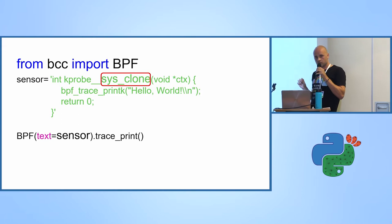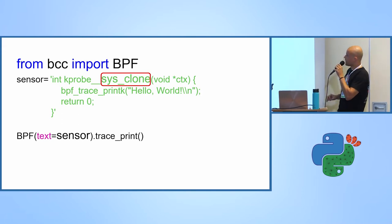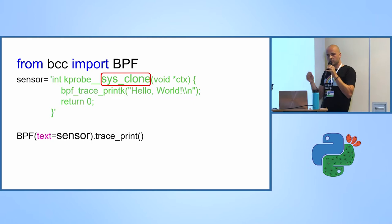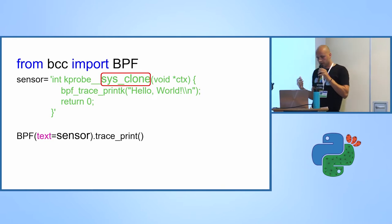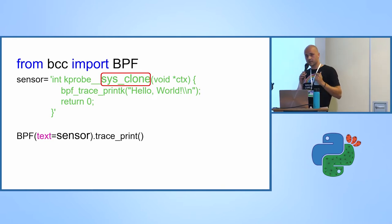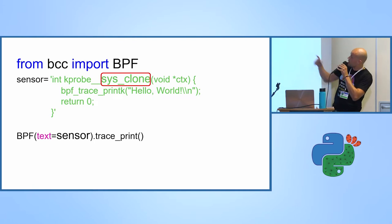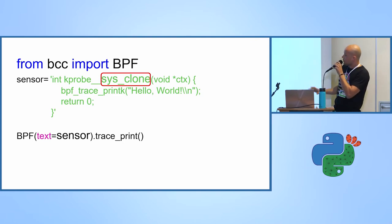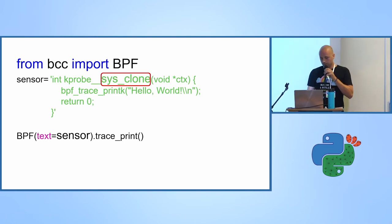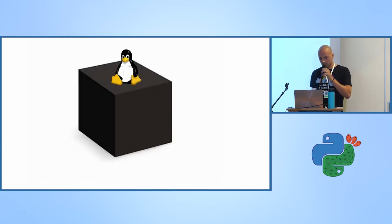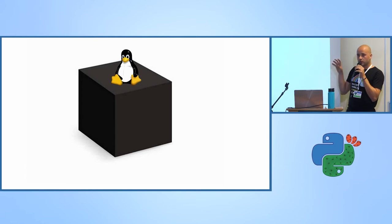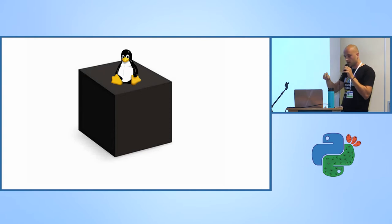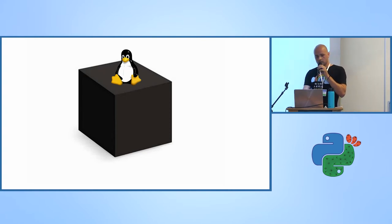Writing your own BPF sensors requires at least some basic kernel knowledge, and most people may not have that. Luckily, there are more than 70 ready-to-use tools in the BCC toolkit — you don't have to have any kernel knowledge to use them. These tools shed a lot of light into the inner kernel processes, making the black-box kernel much more transparent.